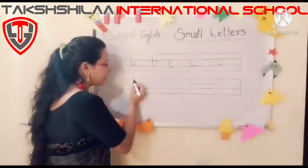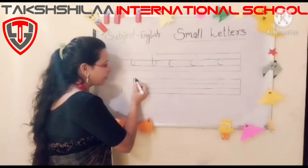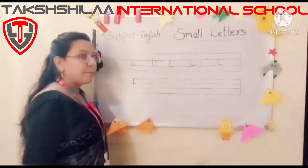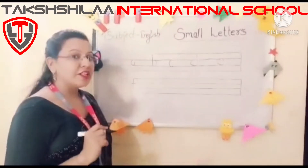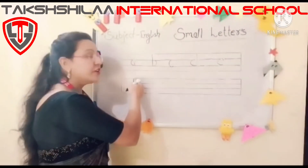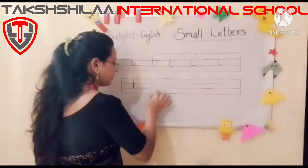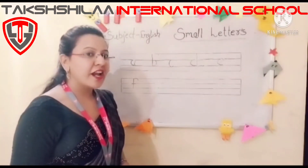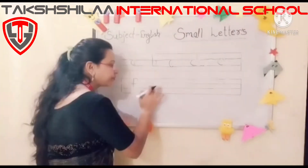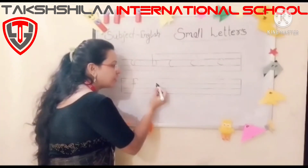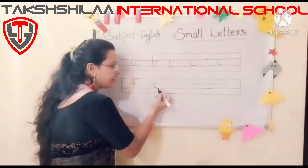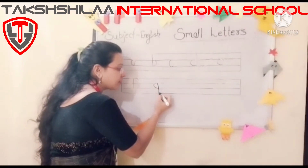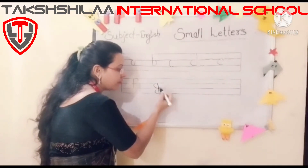How will you write F for fish? Standing line, then half curve, then half curve, then a flipping line. Make F for fish — you have to use only three lines. How will you write G for grapes? First make a small G for grapes, then standing line — that is the last line — then small curve.